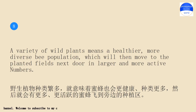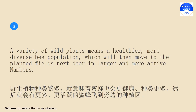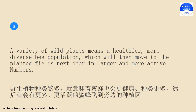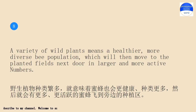A variety of wild plants means a healthier, more diverse bee population, which will then move to the planted fields next door in larger and more active numbers. A variety of wild plants means a healthier, more diverse bee population, which will then move to the planted fields next door in larger and more active numbers.